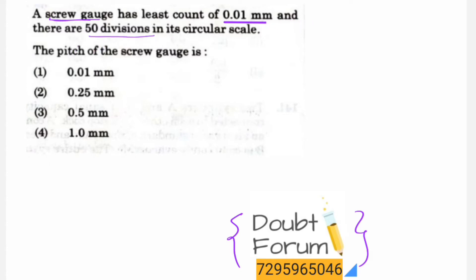There are 50 divisions in its circular scale. So we have two things: first, the least count equals 0.01 mm, and second, there are 50 circular scale divisions. Now the pitch of the screw gauge has been asked.